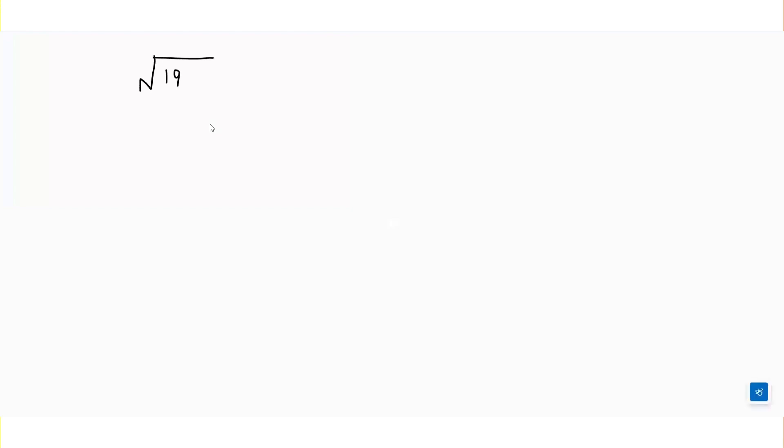Hello everyone, welcome to another video. Today we will learn how to find the square root using the prime factorization method. For example, if I have to find out the square root of 196, I have to make the prime factors for this number. To make the prime factors of any number, we have to divide the number with prime numbers.